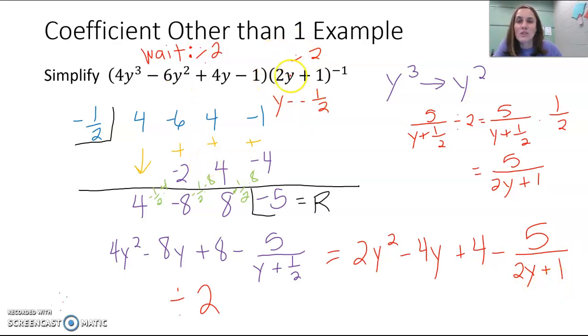So when you're performing synthetic division with this coefficient other than 1, we can just divide this part by 2, do that for right now, perform synthetic division like before, then take everything that you have, your results, and divide them all by 2. But your remainder can just be divided by your original divisor. This remainder of negative 5, it doesn't get divided by 2. It just remains as being divided by the original divisor. So our final answer here then is 2y squared minus 4y plus 4 minus 5 over 2y plus 1.